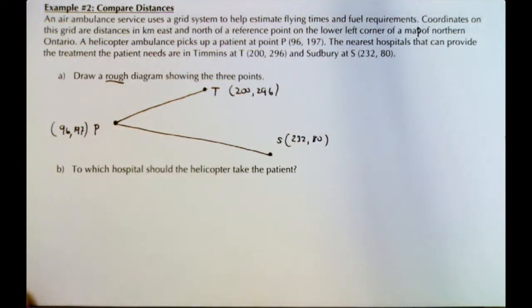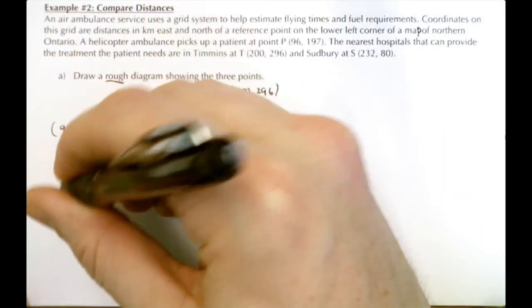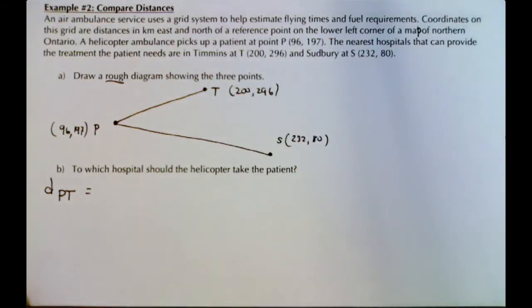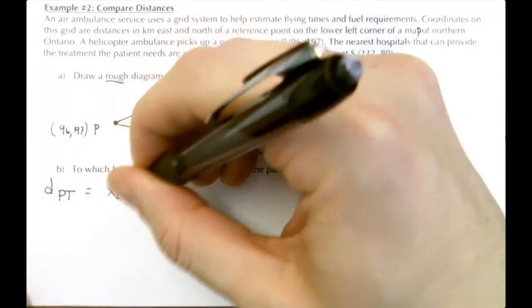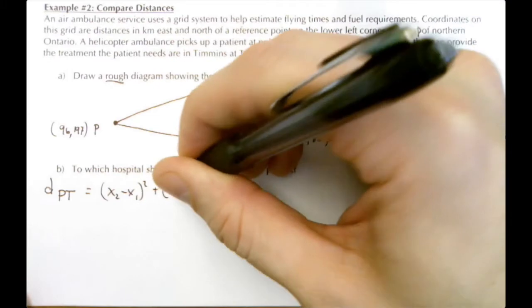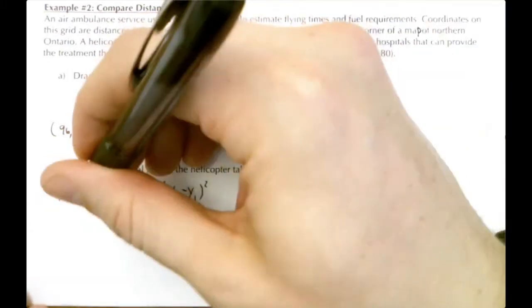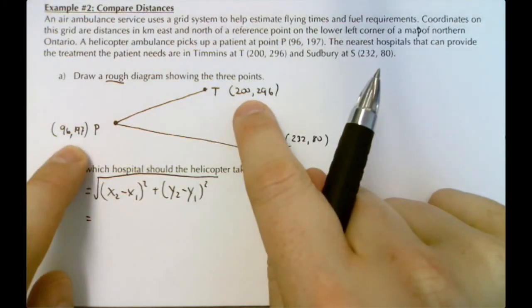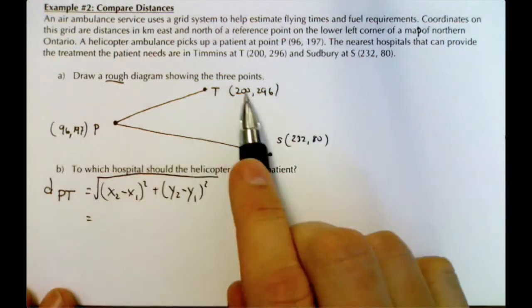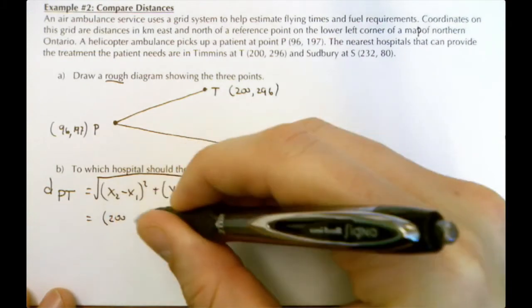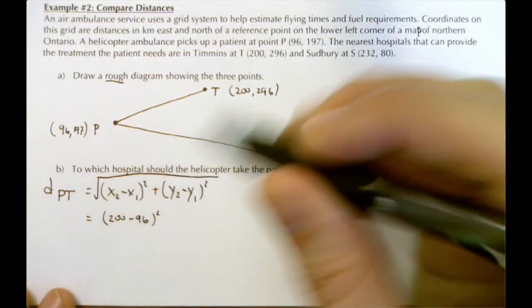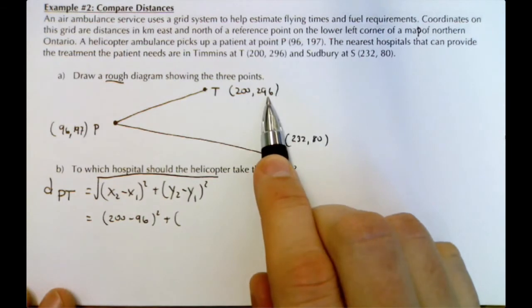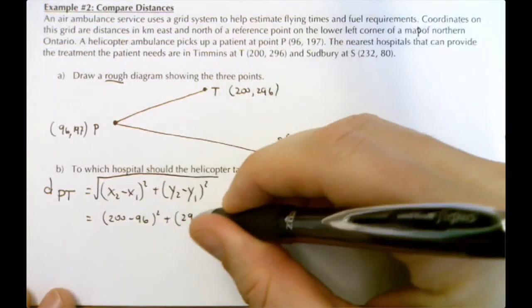These are distance formulas between P and T and between P and S. I'm going to call our distance PT. The equation will be: √[(x₂ - x₁)² + (y₂ - y₁)²]. We're using these two points, so it will be √[(200 - 96)² + (296 - 197)²].